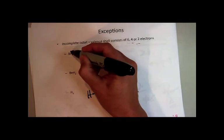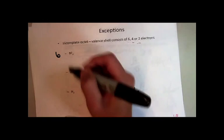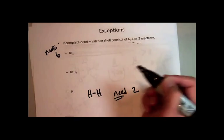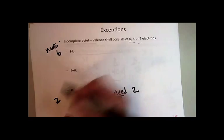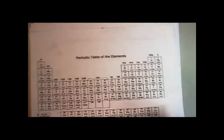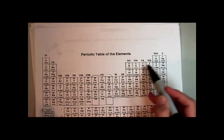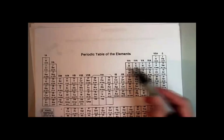Then you have to remember boron. Boron only needs six. Down here, hydrogen needs two. Beryllium only needs four. And if you look at where they are on the periodic table, beryllium is small, it has two valence electrons. Boron is small, it has three valence electrons. So those are just special cases.